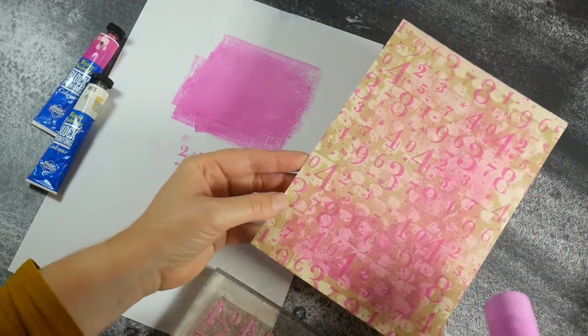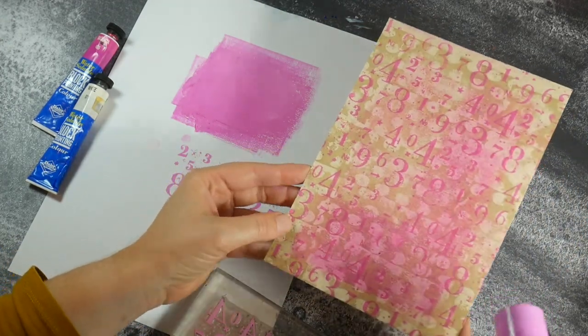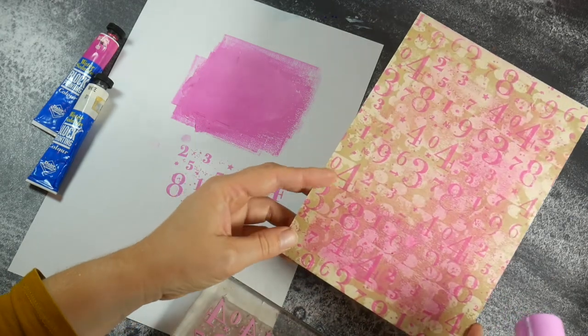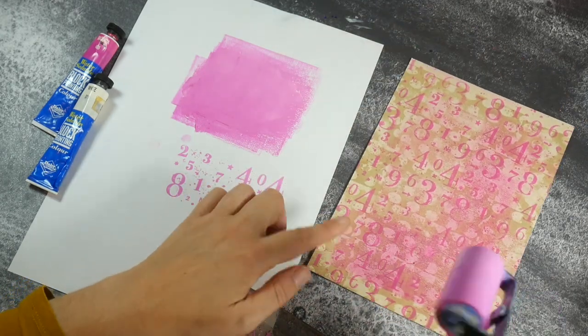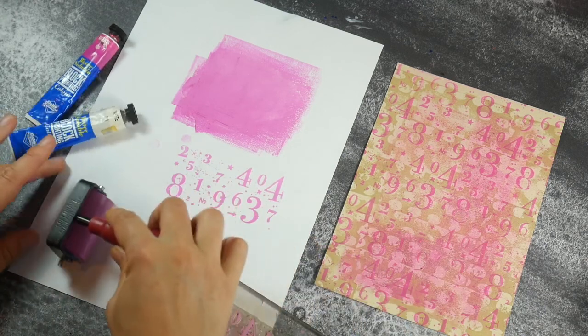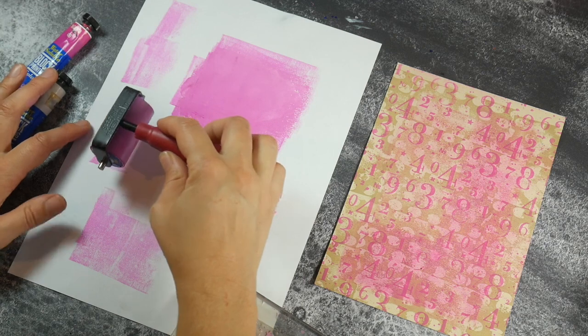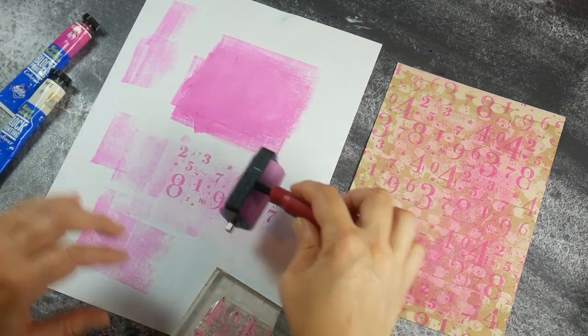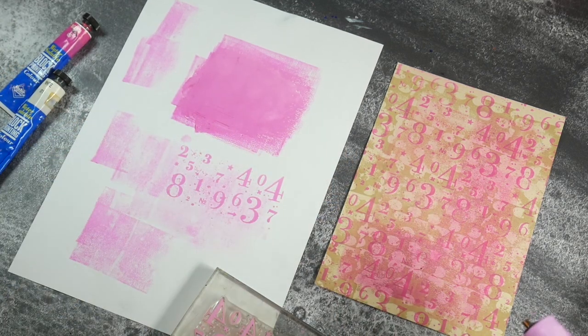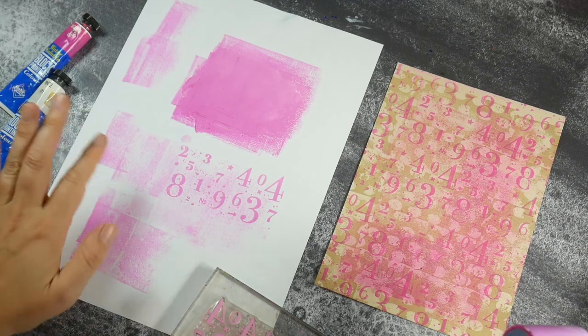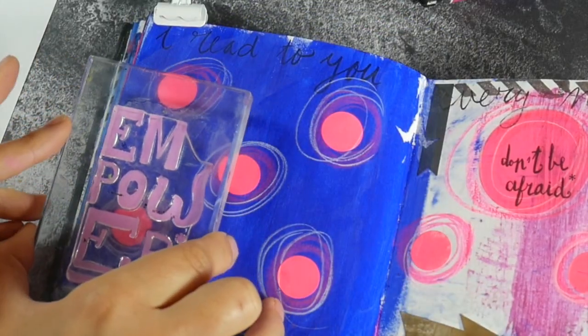So you can make beautiful backgrounds like these, also on colored paper. And what I did here was I just, with the excess paint from my brayer, I just went over it for a bit, just to add a bit of extra color.